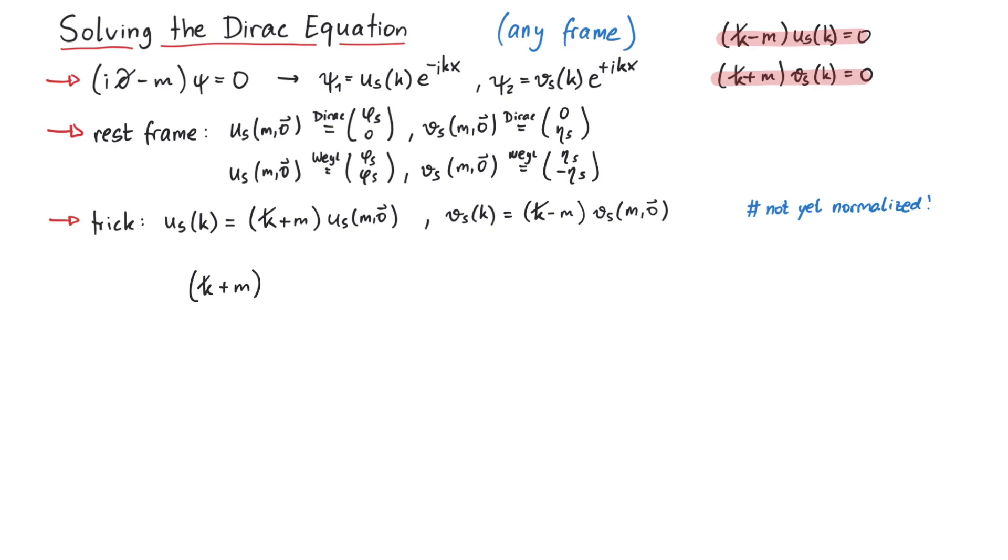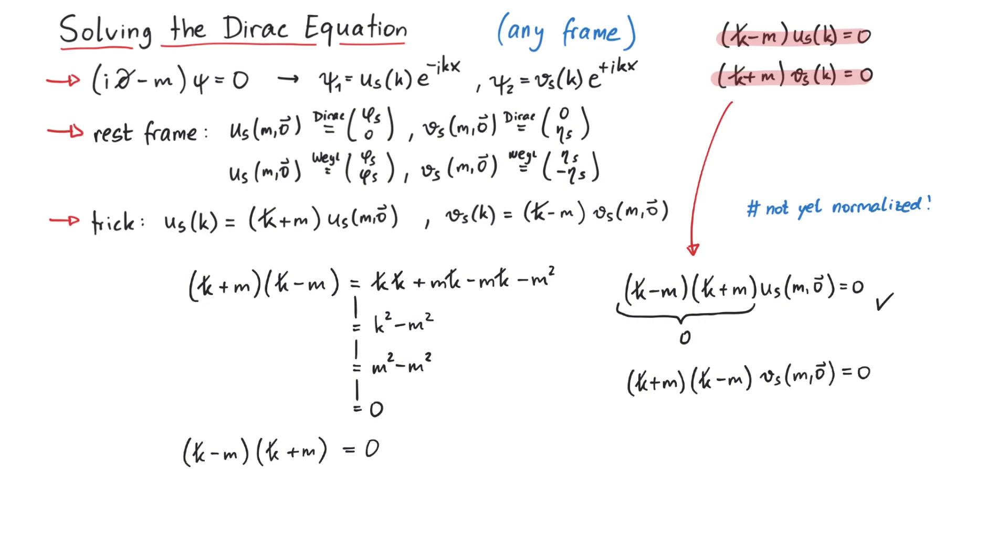Consider this: k slash plus m times k slash minus m is equal to k squared minus m squared. And since k squared is equal to m squared, this is zero. This also works the other way. Therefore, if we write the general solutions like this in terms of the rest frame solutions, then the defining equations are automatically fulfilled. That's the trick we promised you.